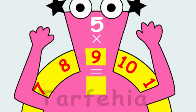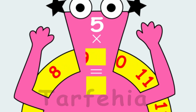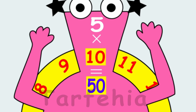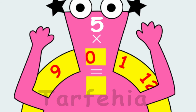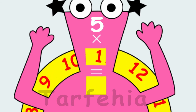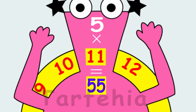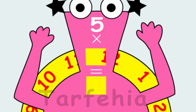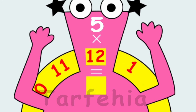5 times 9 equals 45. 5 times 10 equals 50. 5 times 11 equals 55. 5 times 12 equals 60.